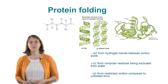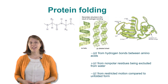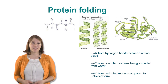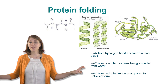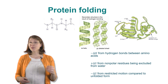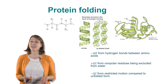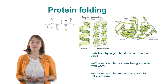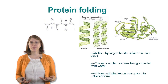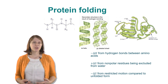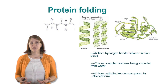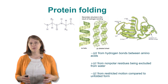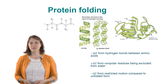One entropic contribution that is not favorable is that when a protein is unfolded, it has many possible conformations. When folded, it has one or maybe two conformations. So entropically, a folded conformation is a little disfavored.